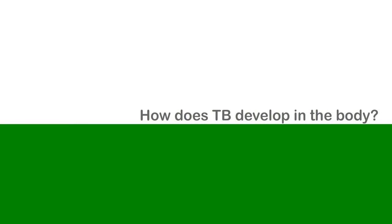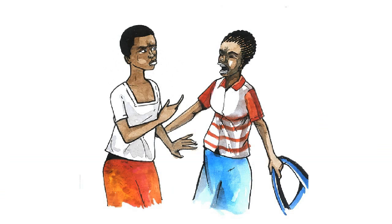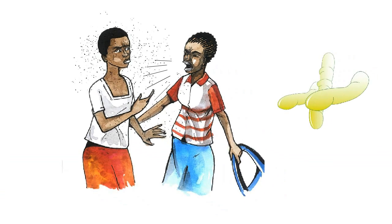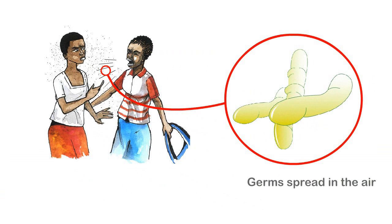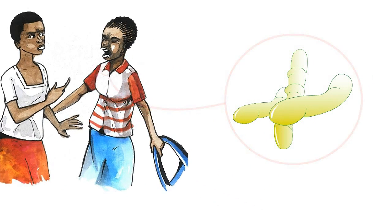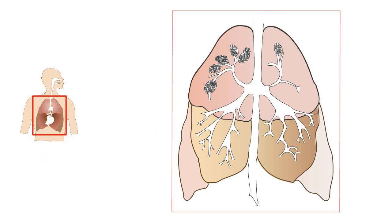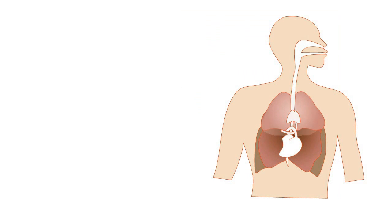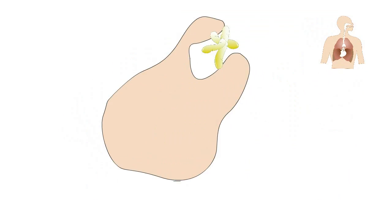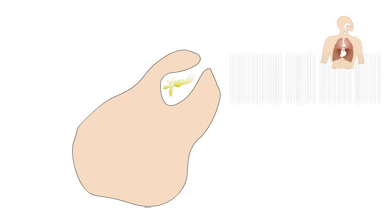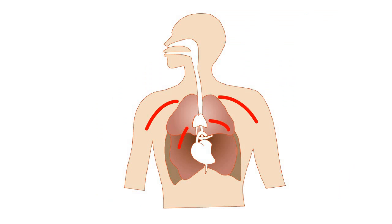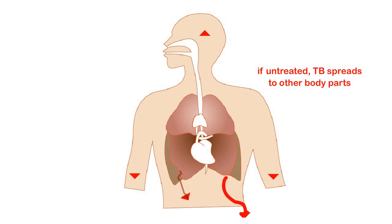How does tuberculosis develop in the body? When an infected person coughs, germs are spread into the air and breathed in by a normal person. These germs travel through the air and into the body through the nose and mouth, spreading deep inside the lungs to the air sacs. The body's immune system tries to fight the germs by surrounding and swallowing them, but if untreated, tuberculosis travels to other parts of the body.